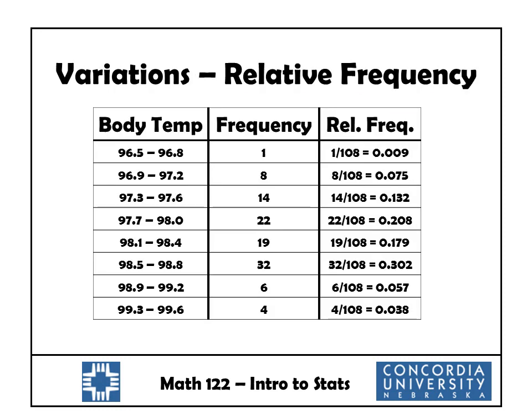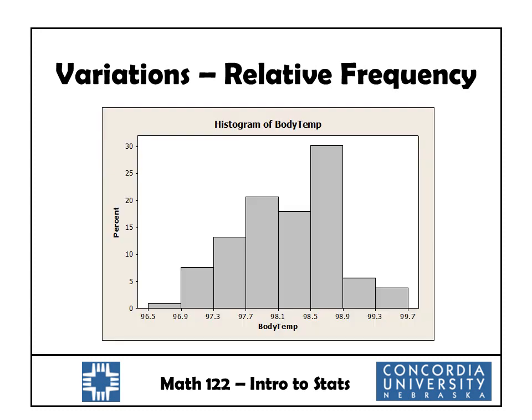Another variation is called a relative frequency distribution. We take our frequency distribution and add a column where we divide each frequency by the total number of data points. So the first one would be 1 divided by 106, which is 0.009, telling us that 0.9% of our data values are between 96.5 and 96.8. We can then draw a relative frequency histogram based on that information, which looks very similar to our frequency histogram. The main difference is how we label our vertical axis — instead of frequency, we label it with percent.